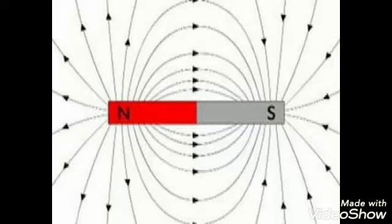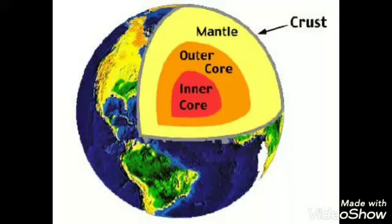Next layer of the earth is the mantle. The mantle is a 2900 kilometers thick shell of rock that encloses the core. It is composed of iron, oxygen,